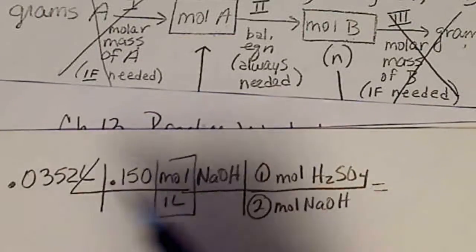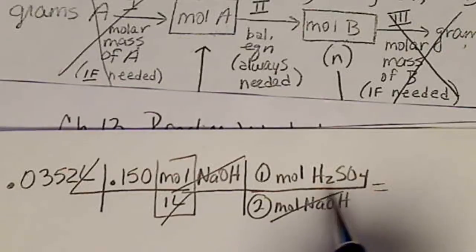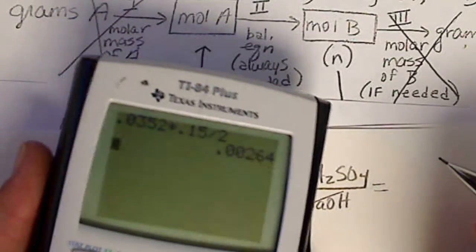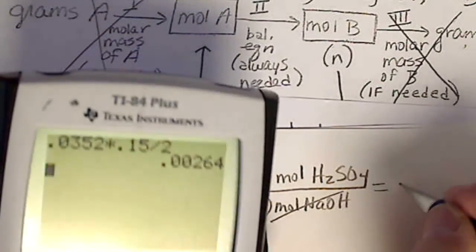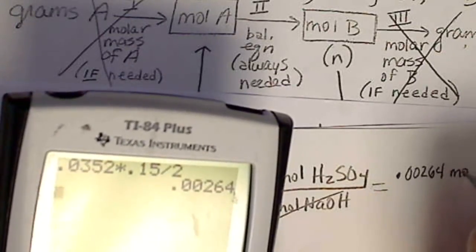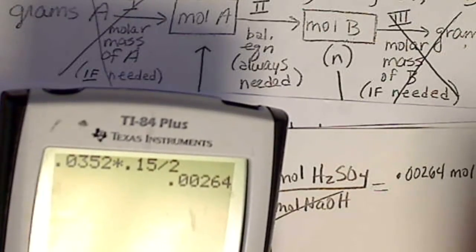Make sure all my units cancel. Moles of NaOH cancels. And if I do this calculation, 0.0352 times 0.15 divided by 2, this number is my moles of NaOH. So I've got 0.00264. I said moles of NaOH, I mean moles of sulfuric acid.